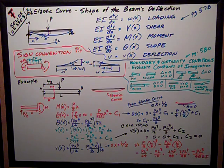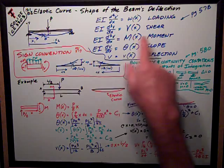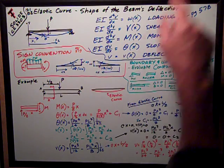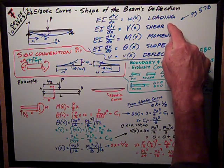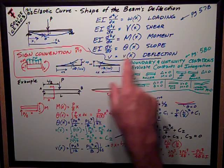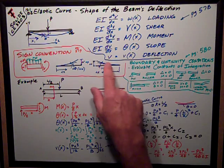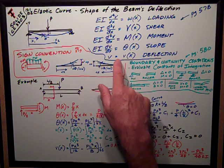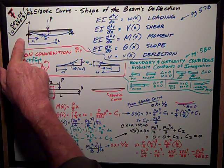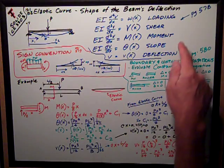Okay, after a bunch of calculus, I get this neat relationship between the loading, the shear, the moment, the slope, and the deflection curve. What I'm after is this deflection curve, lowercase v, is v as a function of x. And for most of the time, we're going to measure x from the left end of the beam.